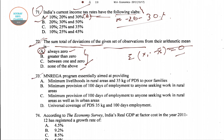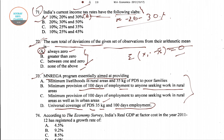In question number 73, it is asked what the NREGA program essentially aimed at providing. The options include minimum livelihoods and 35kg PDS, minimum 100 days of employment in rural areas, minimum 100 days of employment in rural and urban areas, and universal PDS coverage with 100 days employment. Option B is the right answer: NREGA aimed at providing minimum provision of 100 days of employment to anyone seeking work in rural areas.